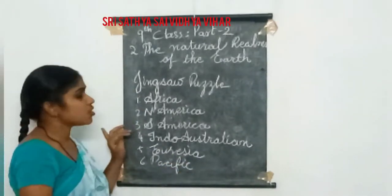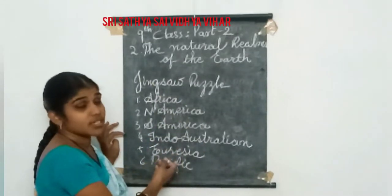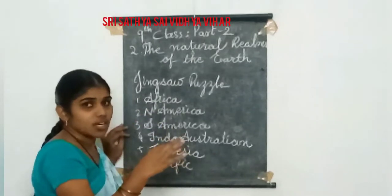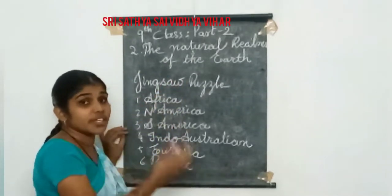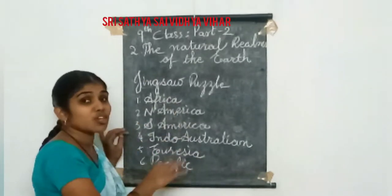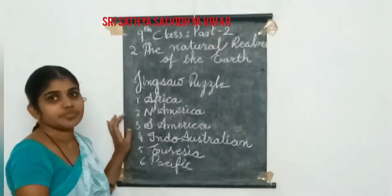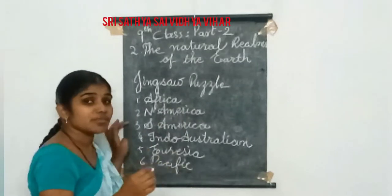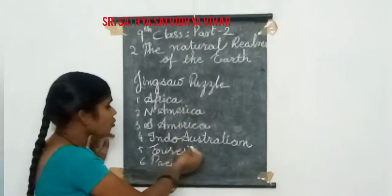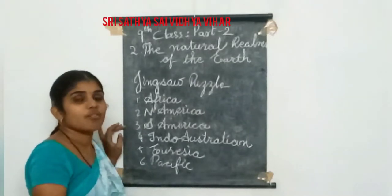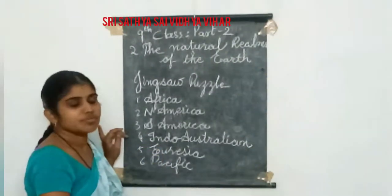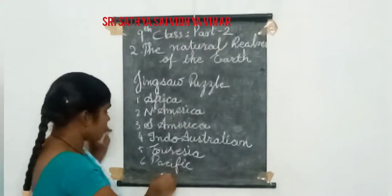A student asked: teacher, you said all the plates are land, but Pacific is an ocean. The teacher explained that Pacific is related to the earth's surface. It is one part of the surface of the earth, so these are the six major plates. Africa's shape was somewhat different at that time. Indonesia and Australia were combined but later divided. Eurasia is now called Europe, and the last one is Pacific.